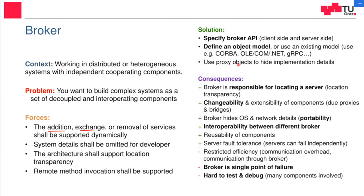What are the consequences? The broker is now responsible for locating a server — the client doesn't have to care about that. We can change components, communication formats, and message formats, and the client won't notice. The broker can hide operating system and network details. We can also chain multiple brokers together and we have fault tolerance on the server side: if one server fails, we can switch to another. However, the broker itself is not fault tolerant — it is a single point of failure. Without the broker, nothing works. A possible solution is to split up the broker using an initial broker that does load balancing or redundancy to other brokers.